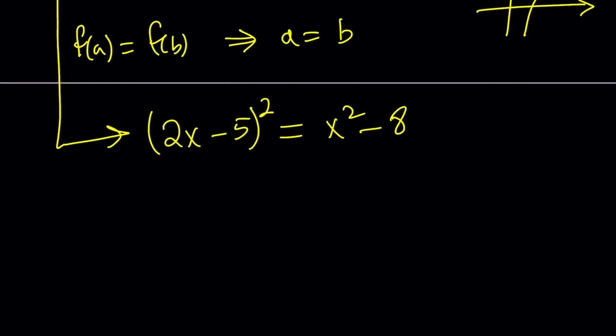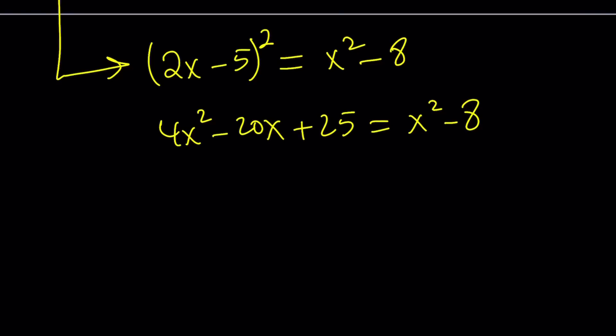We're going to expand on the left hand side. a minus b quantity squared: 4x squared minus 20x plus 25 equals x squared minus 8. Let's put everything on the same side. 3x squared minus 20x, 25 plus 8 is 33.